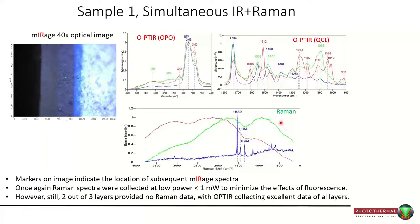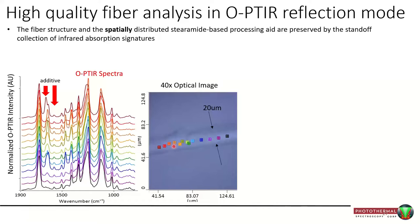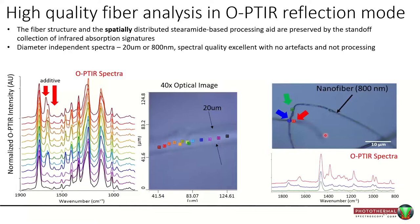A forensic example demonstrates where Raman fails but OPTIR does not: a paint chip cross-section from a vehicle accident, with single point spectra from three different layers. The simultaneously collected Raman showed fluorescence in two of the three layers, making them uninterpretable, while the OPTIR spectra were completely unaffected by fluorescence in all layers. Fibers are also quite difficult with traditional IR measurements, but OPTIR delivers high quality spectra with no data processing — raw spectra collected in real time, showing additives changing along the fiber length, whether it's a 20 micron or an 800 nanometer fiber.